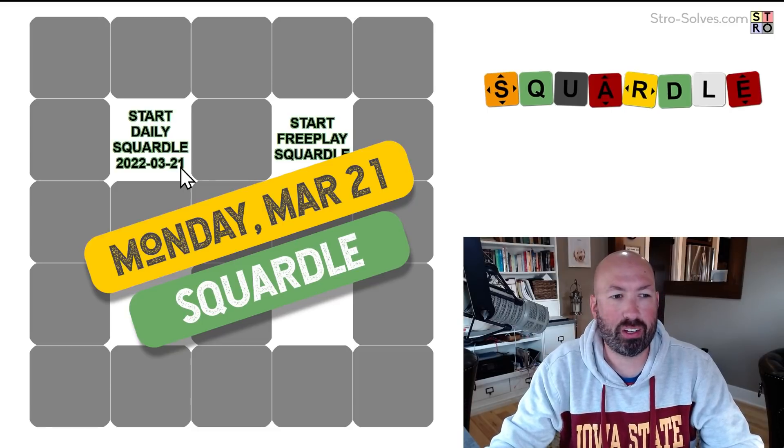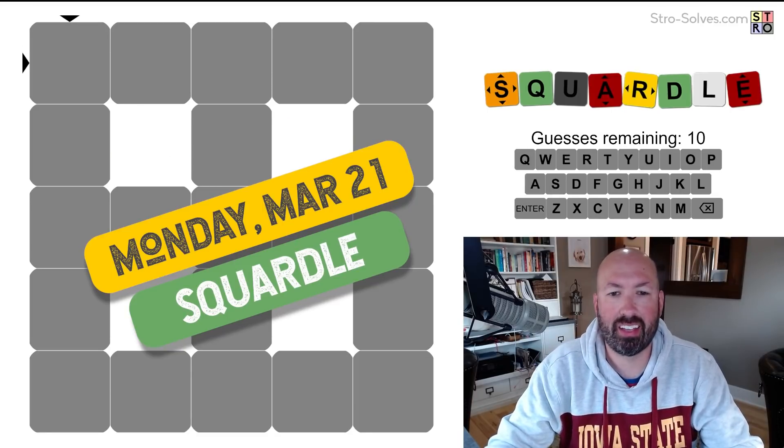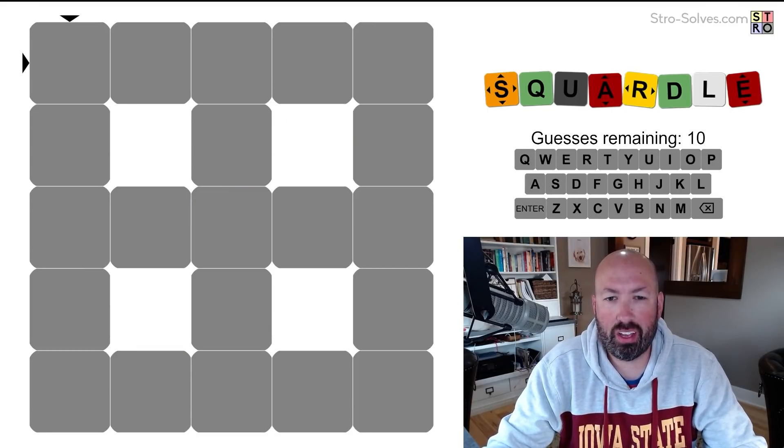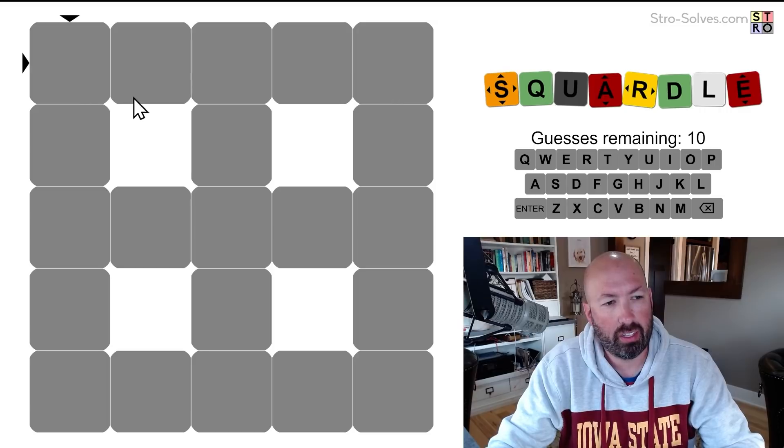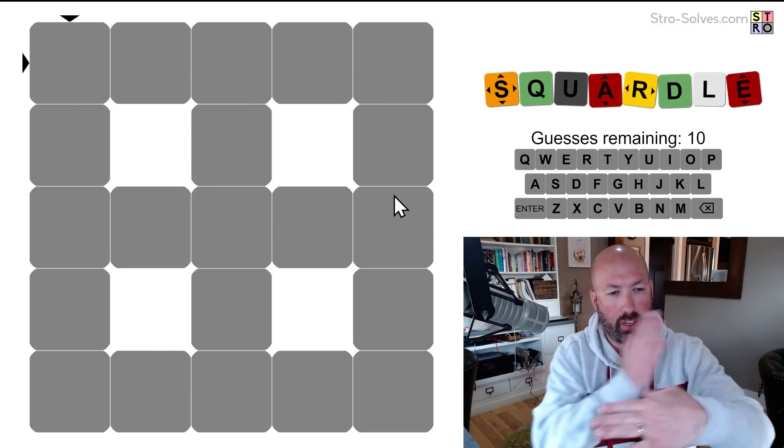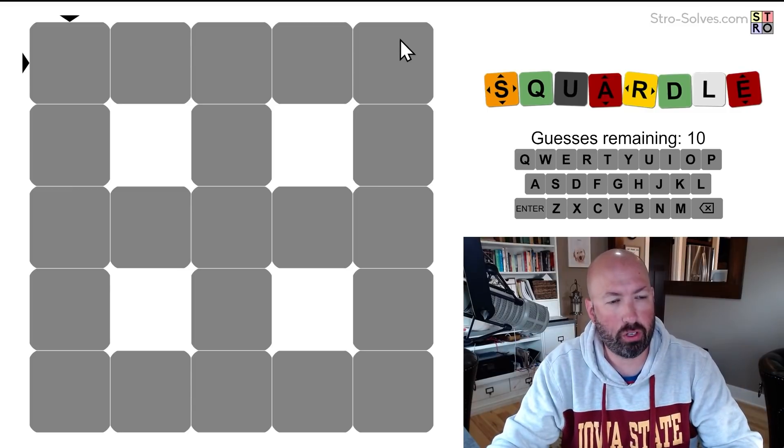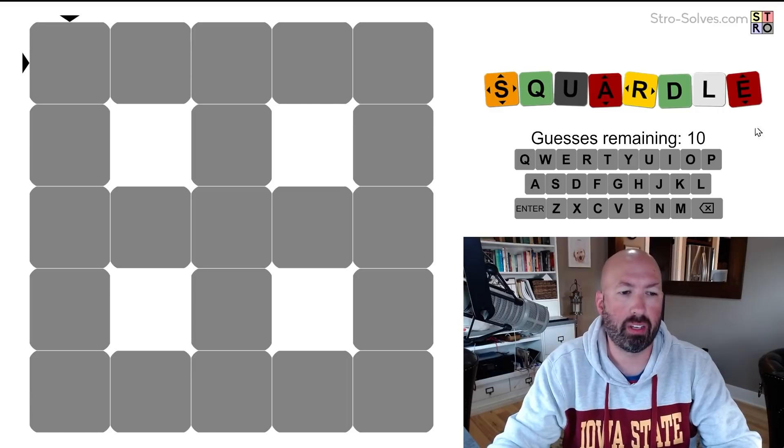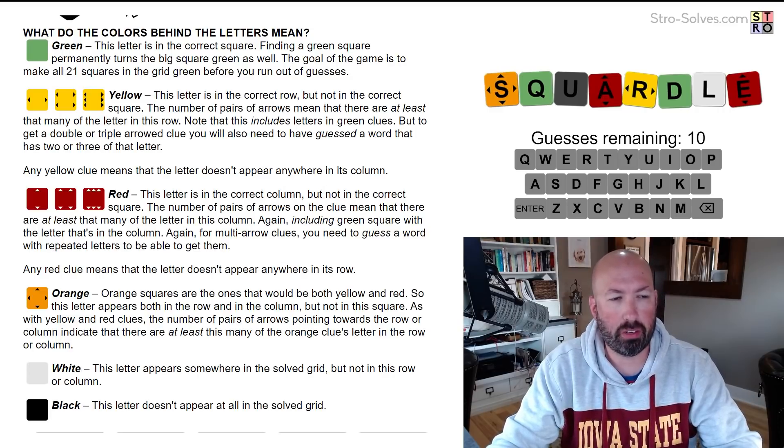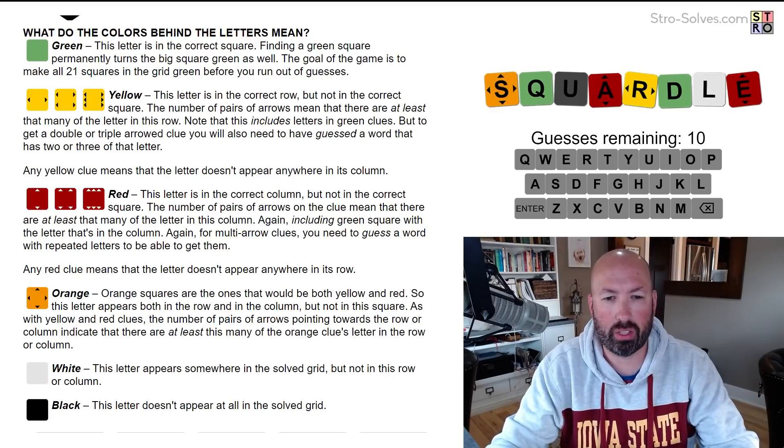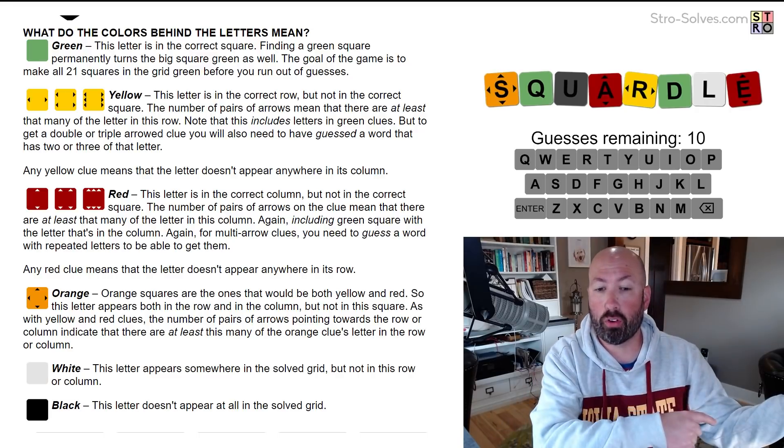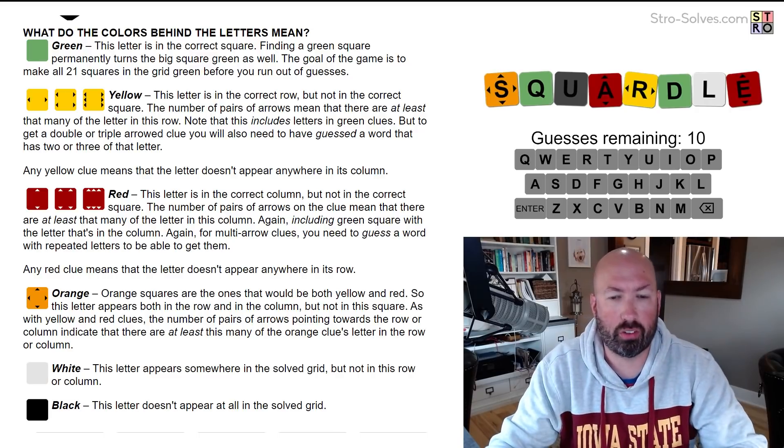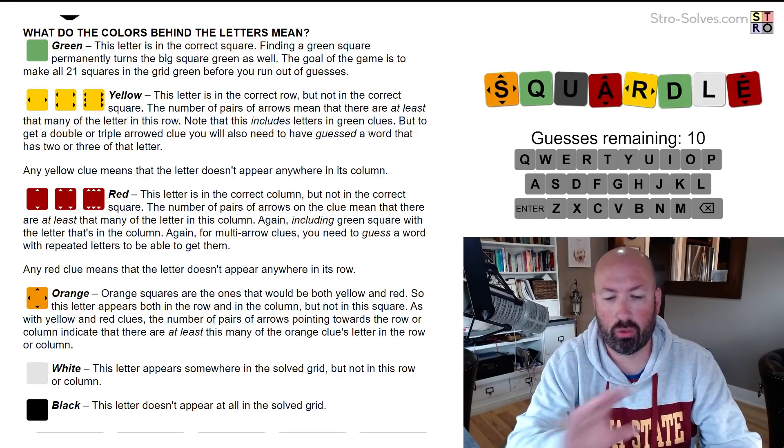All right, I am looking at the Squirdle for March 21st. So if you're not familiar with Squirdle, I'll have a link in the description where you can go check out the rules. It's a little bit tricky, so it's like Wordle, but you're guessing a bunch of words that are in a grid, and we're guessing the first row and first column, and then we guess the third row and third column. There's a lot of information about the orange and the red and the yellow and what they all mean, so look in there if you're not familiar. Or go check out my first Squirdle video. I'll also link that one in the description, and I went through the rules in that one.